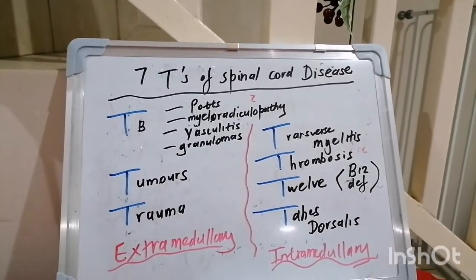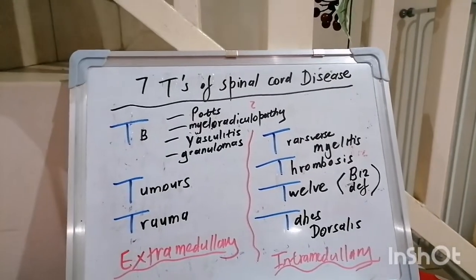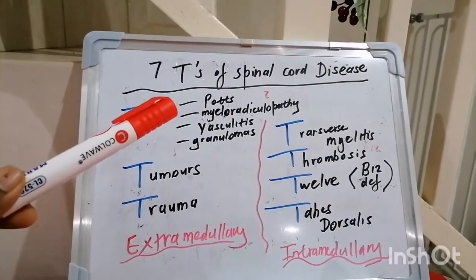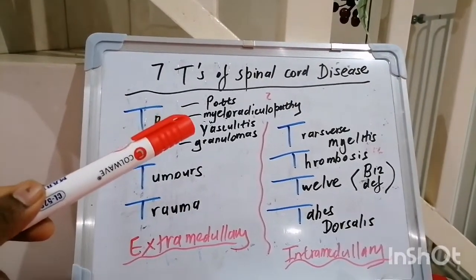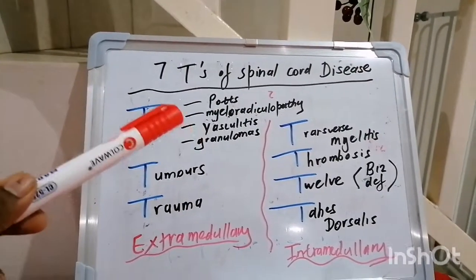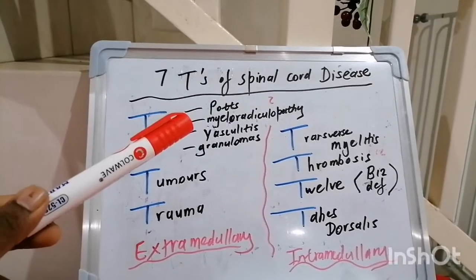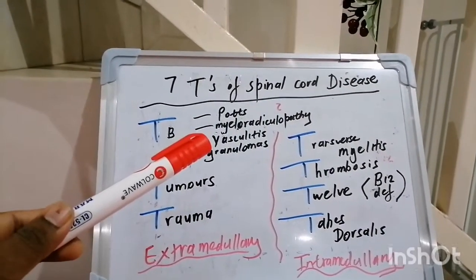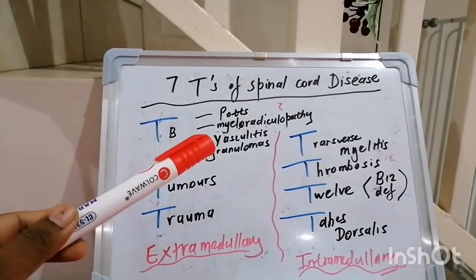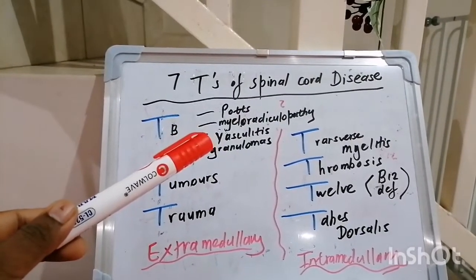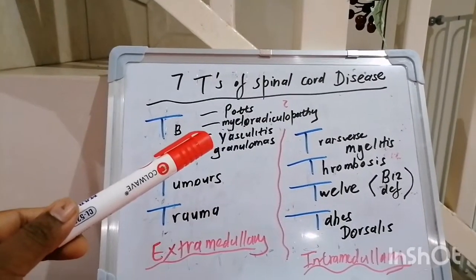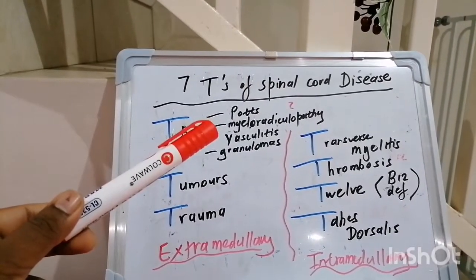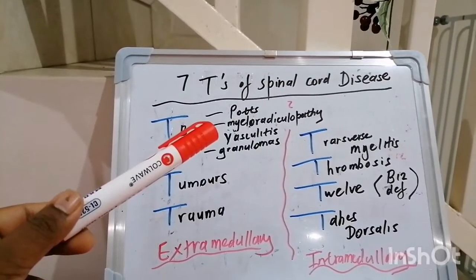The first T stands for TB. TB can affect the spine in many ways. The first, and probably one of the most common, is Pott's disease, which effectively is a combination of osteomyelitis and arthritis affecting multiple vertebrae. The typical site of involvement is the anterior aspect of the vertebral body adjacent to the subchondral plate, occurring frequently in the lower thoracic vertebrae.